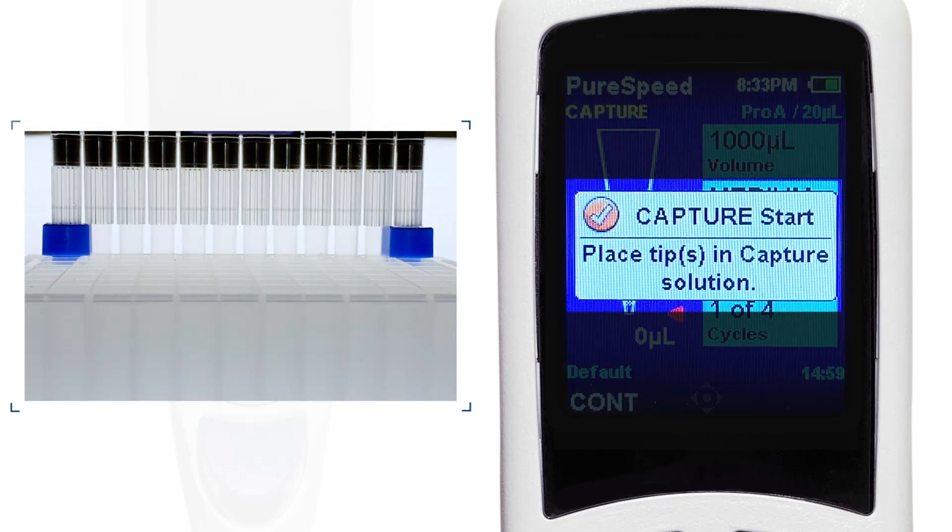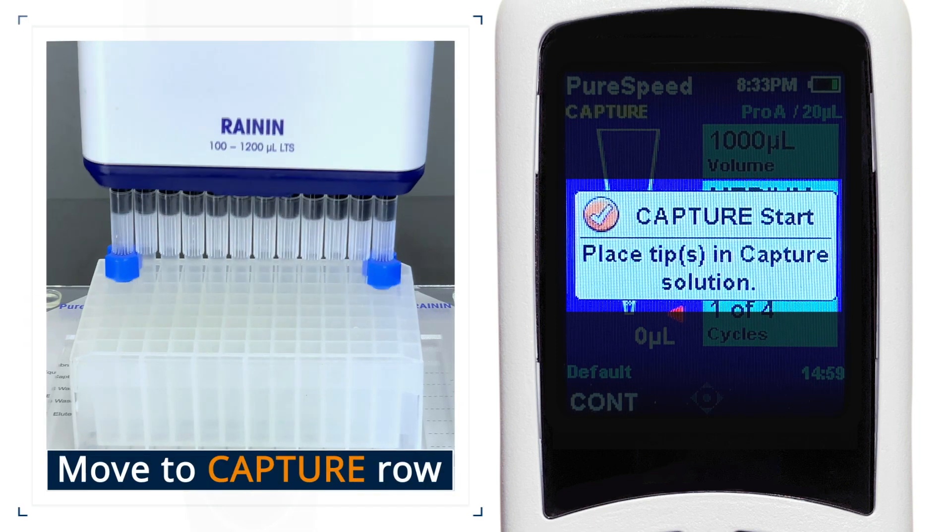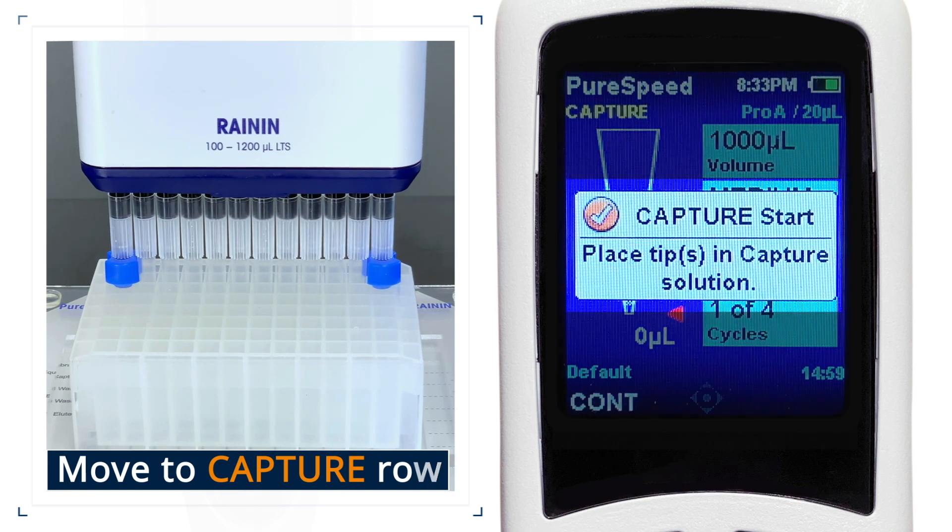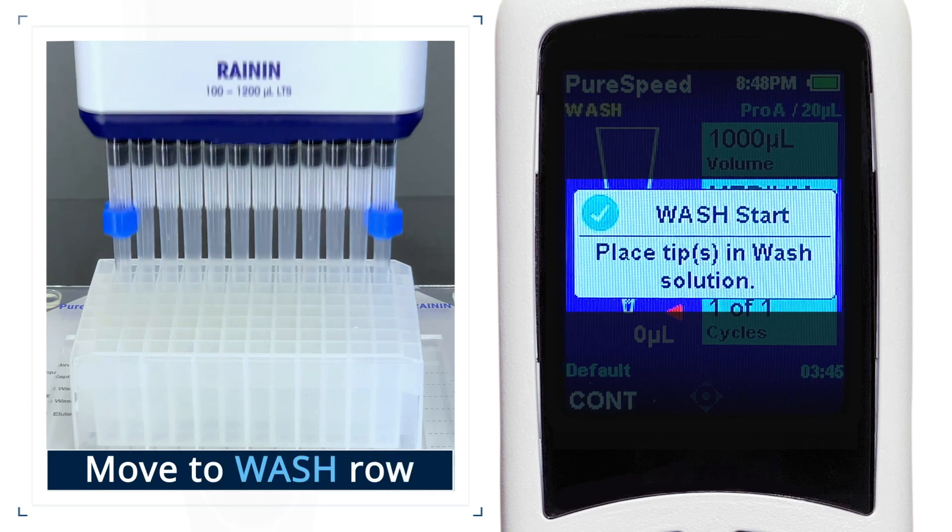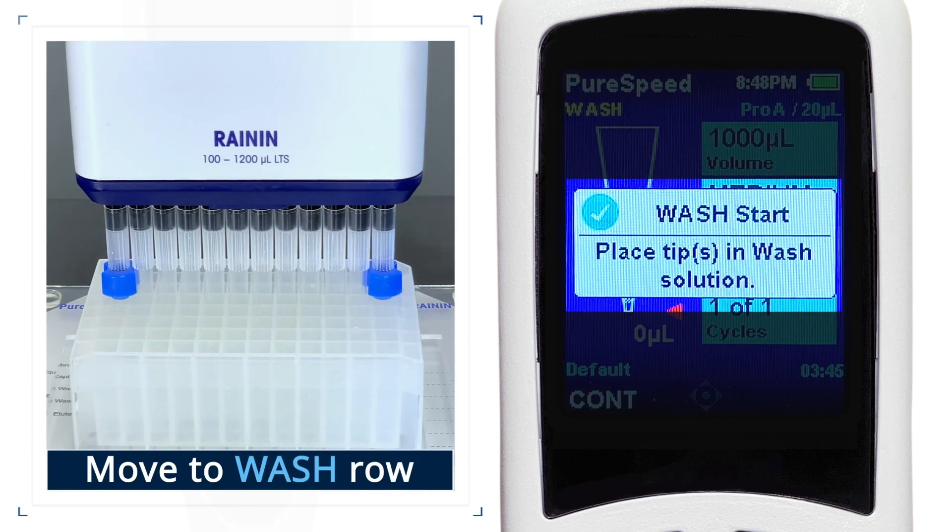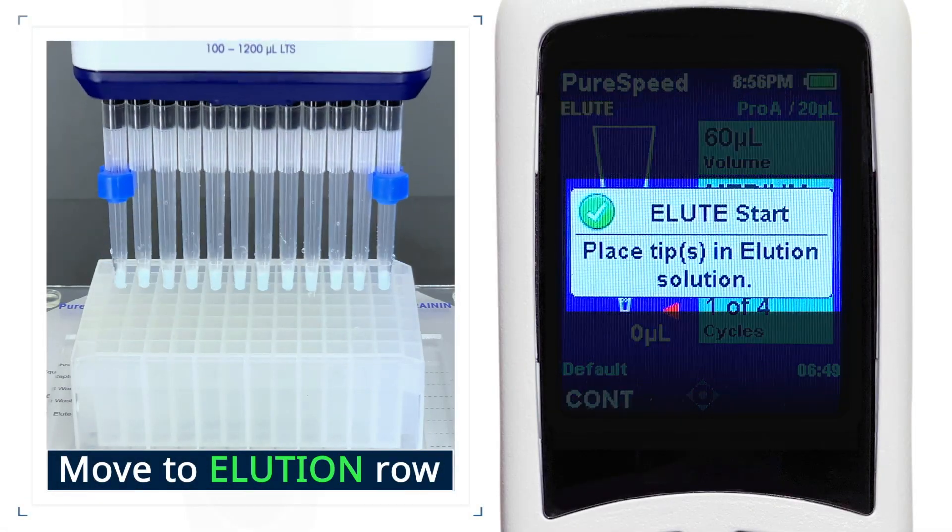Once the Equilibration is complete, the system will ask you to move the tips to the Capture Solution row. Then move the pipette with tips to the Capture row. Once Capture step is complete, you will be asked to move the tips to the Wash row, then Elution row after that.